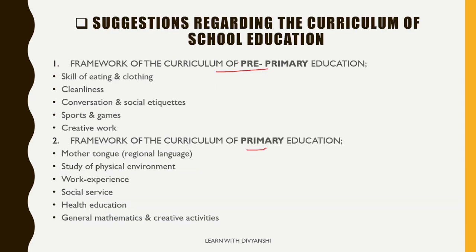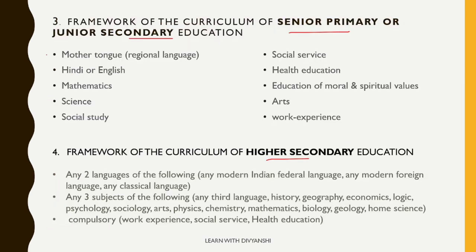At the pre-primary level, children should be taught skills of eating and clothing, cleaning, conversation and social etiquette. They should be involved in sports and games and creative work. At the primary level, the curriculum should include mother tongue (regional language), study of physical environment, work experience, social service, health education, general mathematics, and creative activities.